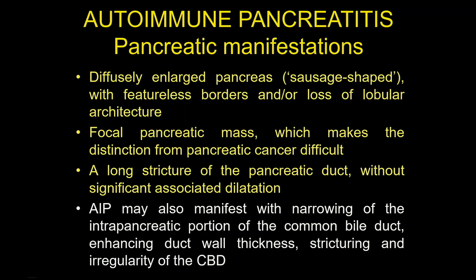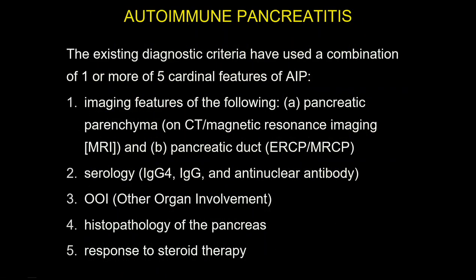Autoimmune pancreatitis can present as diffuse or focal. With diffuse enlargement of the pancreas — the so-called sausage appearance — there is no problem making a correct diagnosis. But a focal mass can simulate pancreatic cancer. Sometimes there is a long stretch of the pancreas without significant upstream ductal dilatation, and sometimes there is narrowing of the intrapancreatic portion of the common bile duct. There are five criteria needed to make a correct diagnosis, with imaging features classified at level one or level two according to specificity.